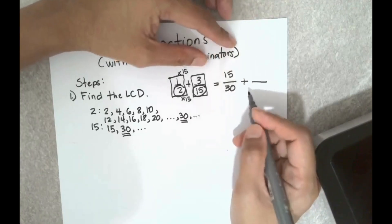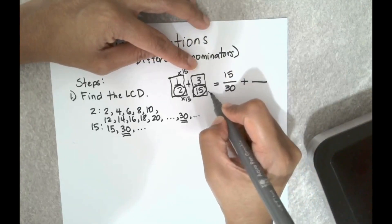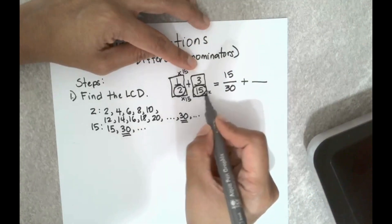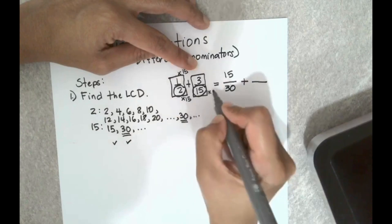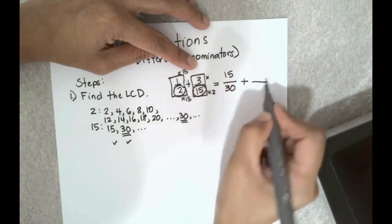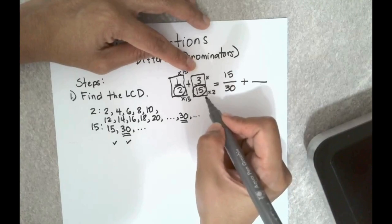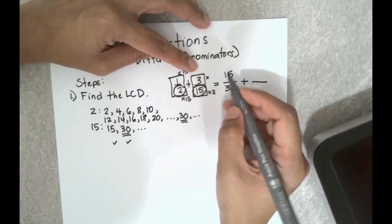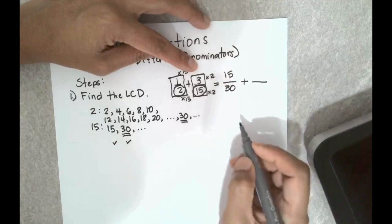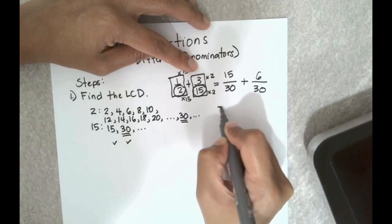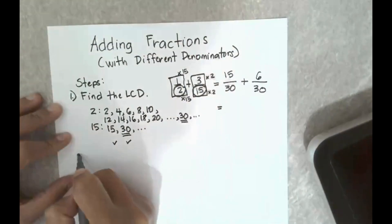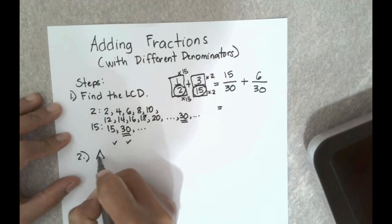Now 3/15, in order for the denominator to be equal to 30, I have to multiply by 2. For the new fraction to be equivalent to 3/15, I also have to multiply the numerator by 2. So I have 6 over 30. Once the denominator is the same I can now add the numerators.